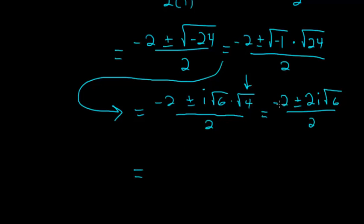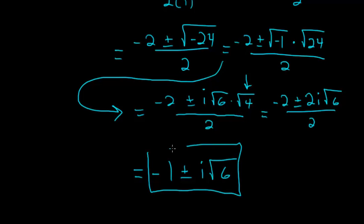And finally if we simplify minus 2 over 2 is just negative 1 and then 2 over 2 is just 1 so we have minus 1 plus or minus i times the square root of 6 and so these are both of our roots.